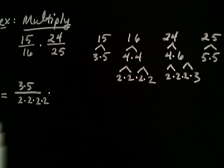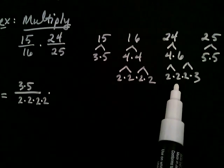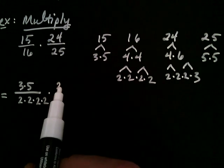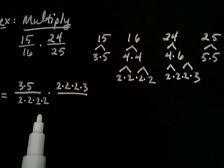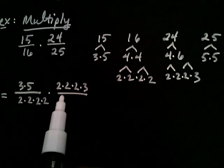And 24 I can see from over here is two times two times two times three. And 25, well, 25 was five times five.